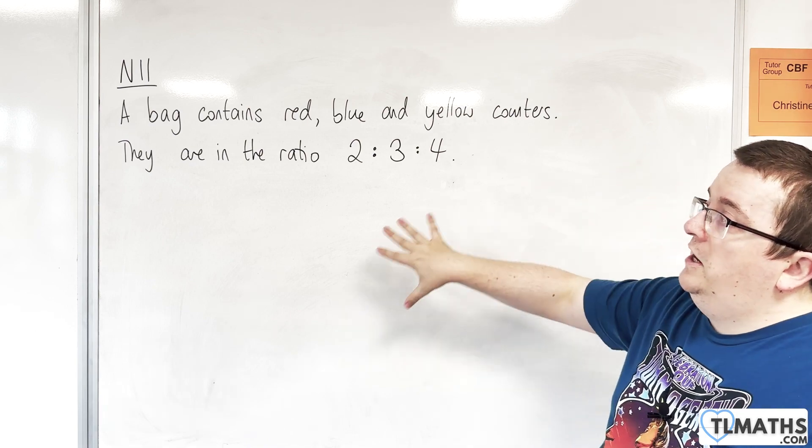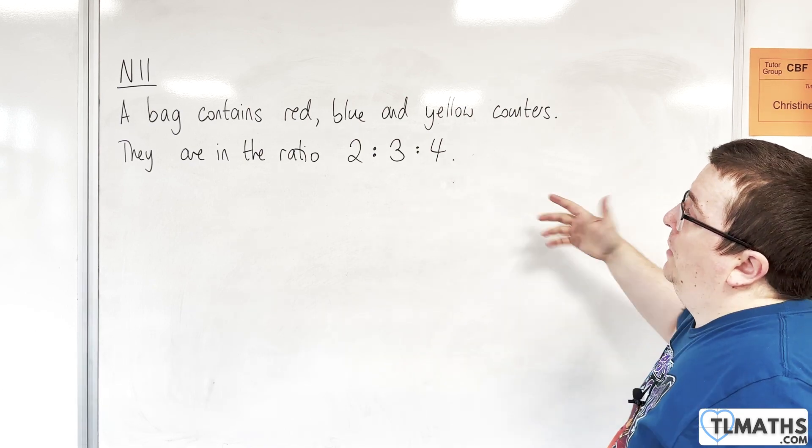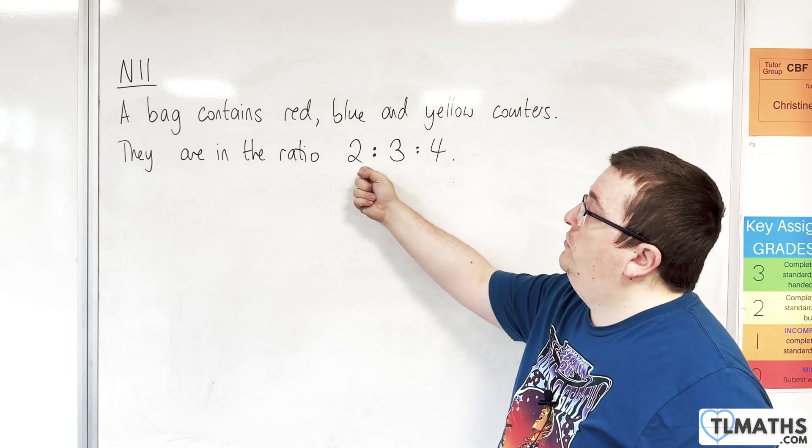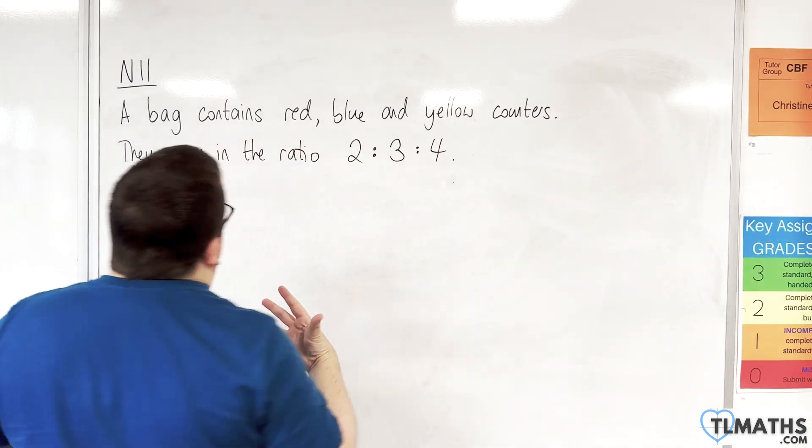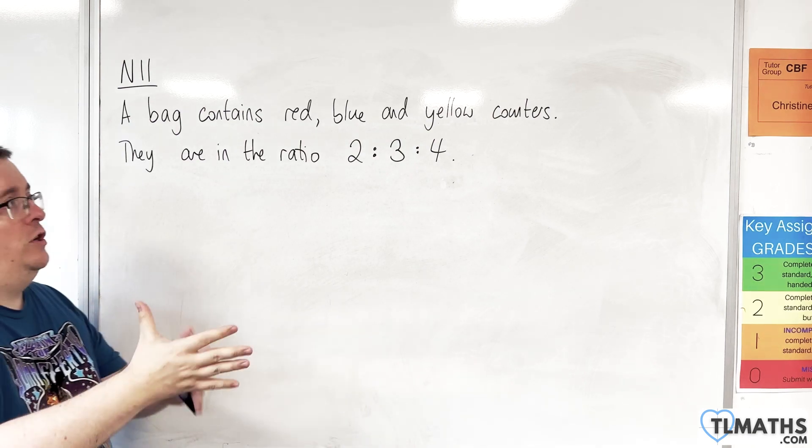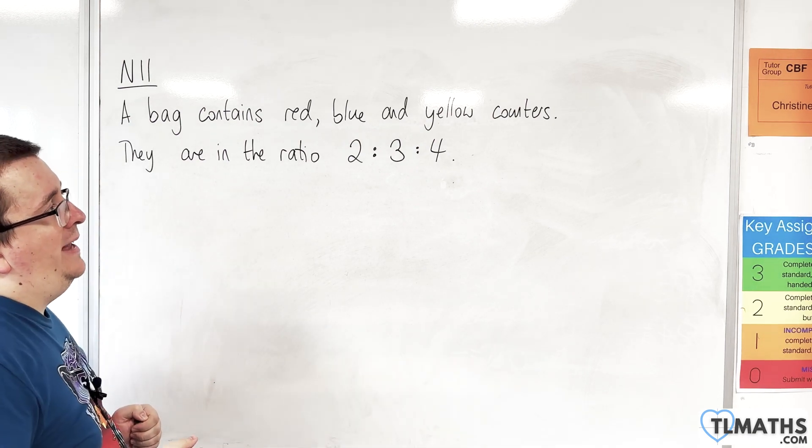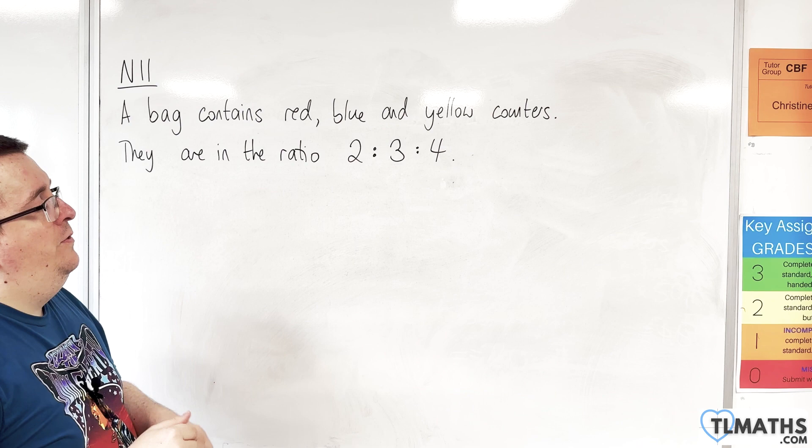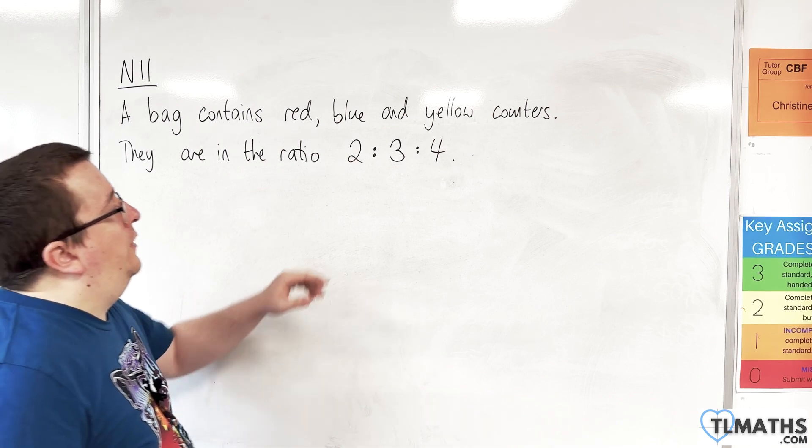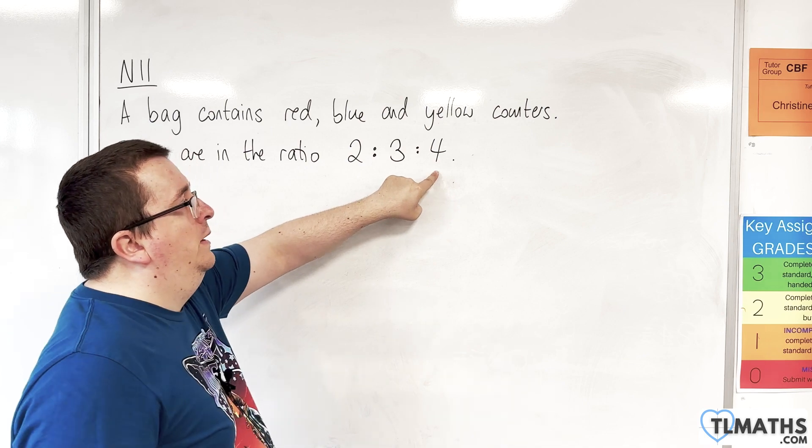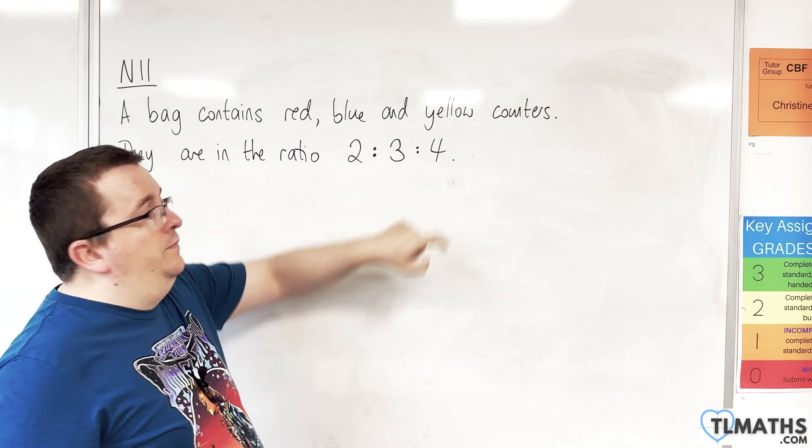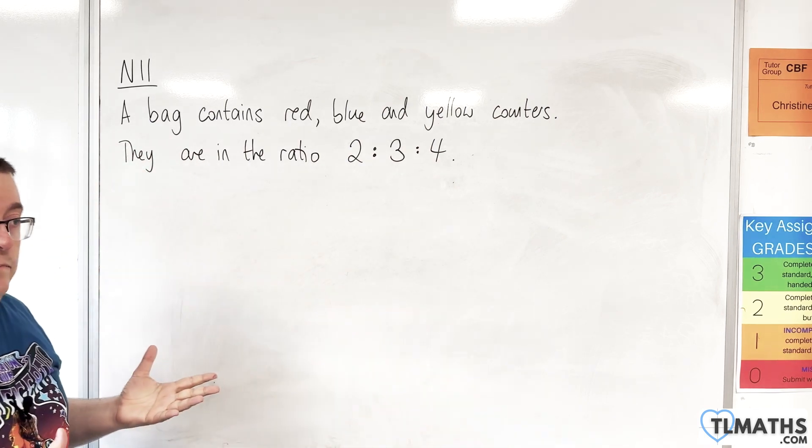In this scenario, we have a bag that contains red, blue, and yellow counters in the ratio 2:3:4. If I was interested in what fraction each of those types of counters make up, then what I do is first add up the numbers: 2 + 3 + 4, which equals 9. That's our denominator.